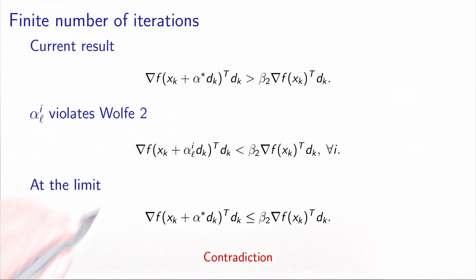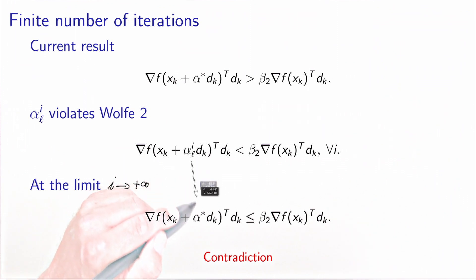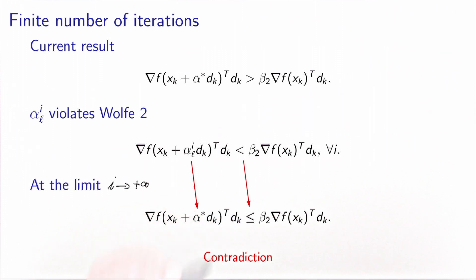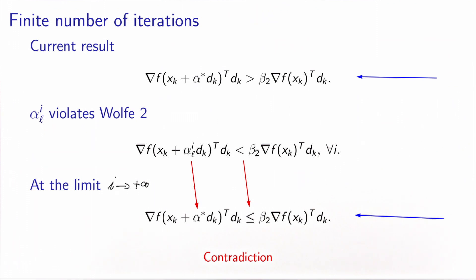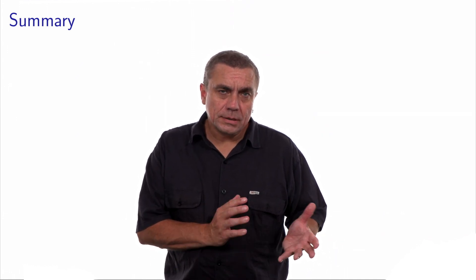Sending i to infinity, αLi converges to α*, and the strict inequality becomes less-than-or-equal. We now obtain a contradiction: we have two conclusions — one says the directional derivative at α* is strictly greater than β2 times the directional derivative at 0, and the other says it is less than or equal — which are not compatible. Since we derived this contradiction assuming an infinite number of iterations, the algorithm will reach a valid step in a finite number of iterations. The simple algorithm that works with trials and errors — increasing the step if too short, decreasing it if too long — will eventually find a valid step after a finite number of iterations.